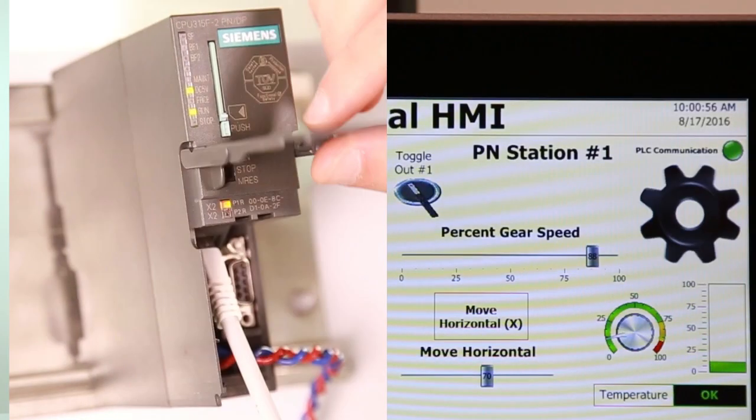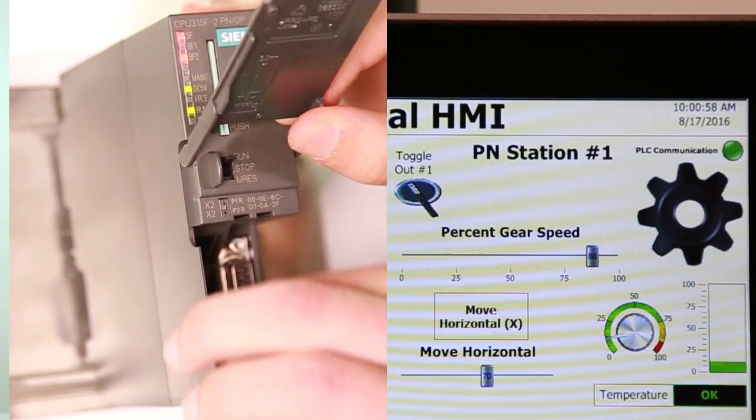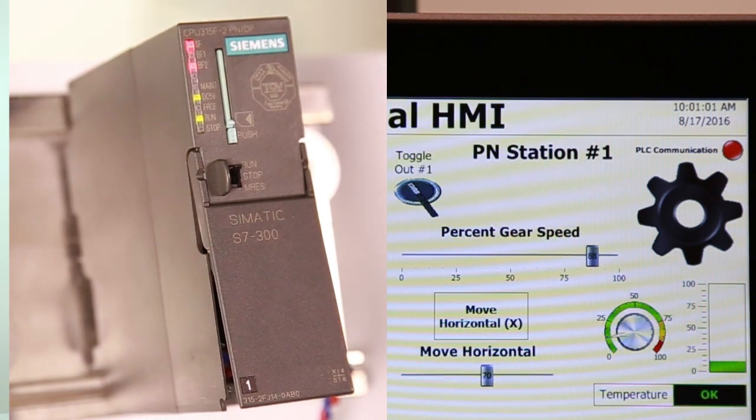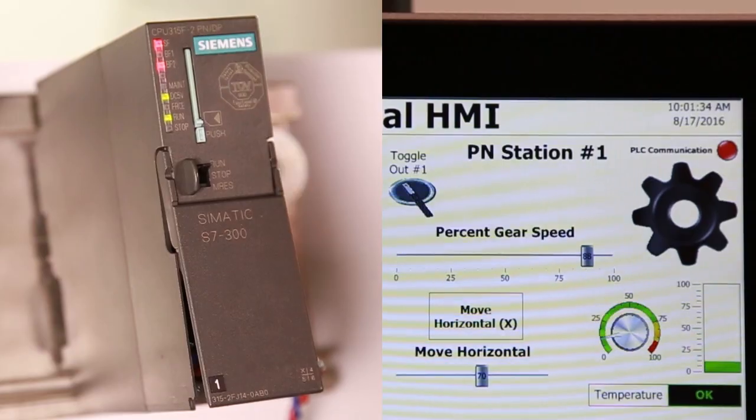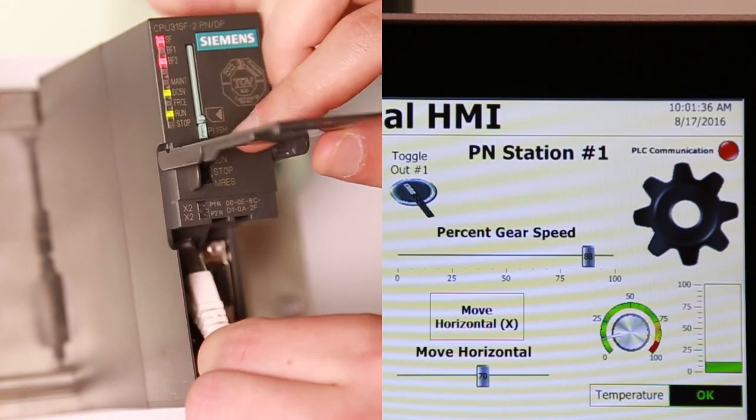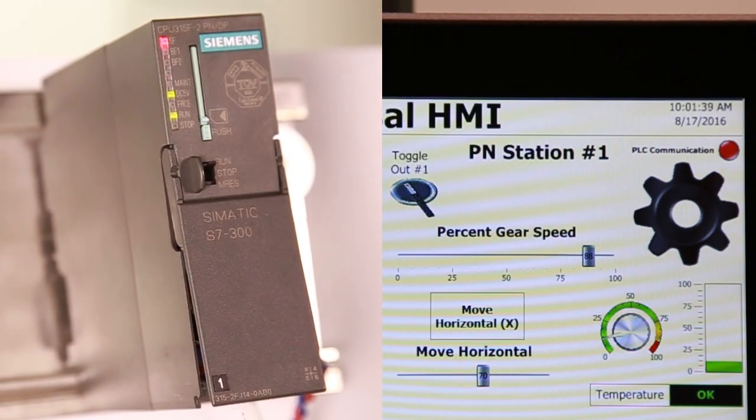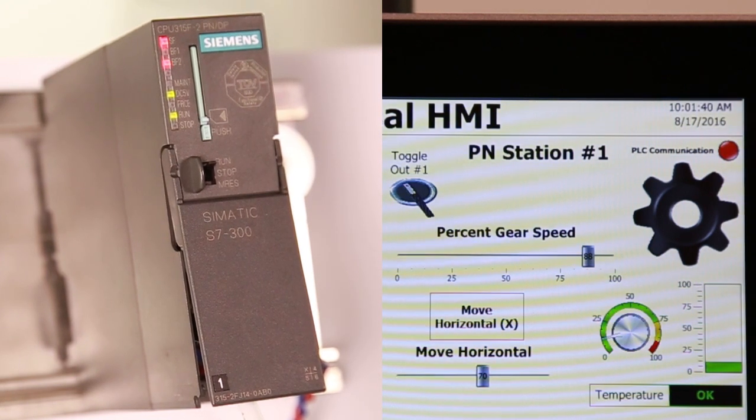When I remove power from the Siemens station, all the variables stop updating as the PLC loses communication. The Rockwell communication is still up and running. Plugging the Siemens controller back in, Phoenix Contact's Universal HMI will automatically detect the controller and begin updating.